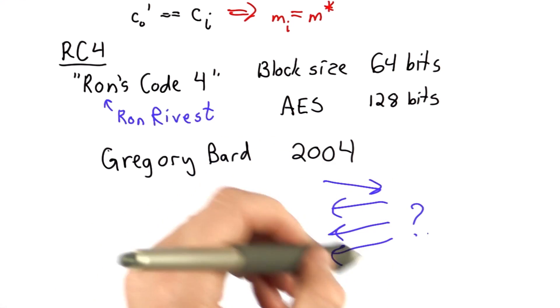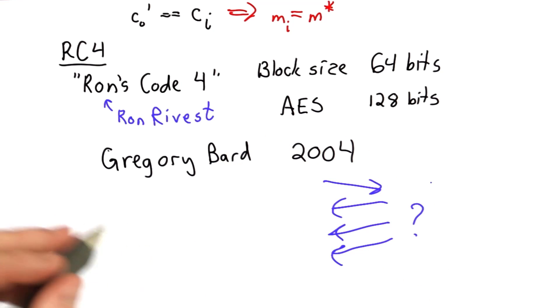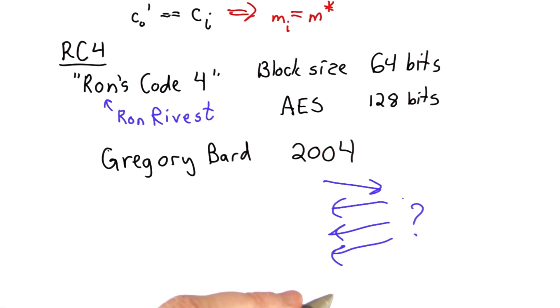Those are still going to be part of the encrypted session, but the attacker can control what those requests are, and perhaps can design requests that the server will respond to in a particular way, giving the attacker control over the first block in the next message.